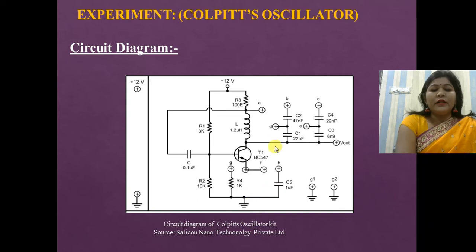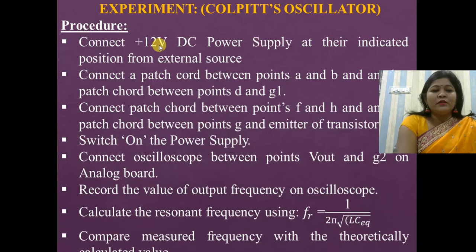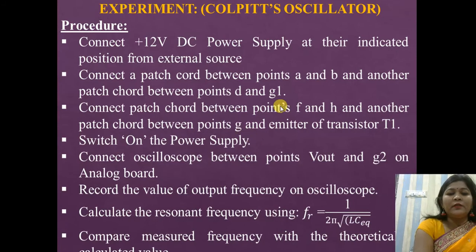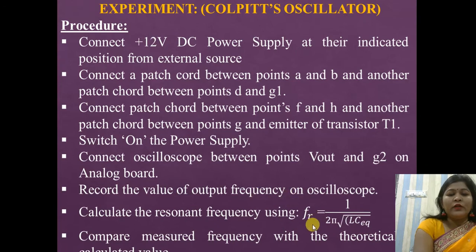This is the analog board circuit diagram of the Colpitt's oscillator. The procedure is: first, connect plus 12V DC power supply at the indicated position from an external source. Second, connect a patch cord between points A and B, and between points D and G1. Then connect another patch cord between points F and H, and between points G and T1. Switch on the power supply, then check the output results on the CRO and calculate the resonant frequency.